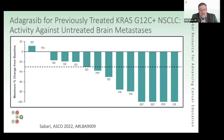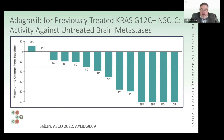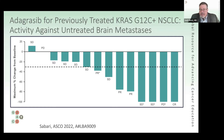Finally, there was a separate analysis of adagrasib looking at patients with untreated brain metastases, showing in a relatively small number of patients that significant shrinkage could be achieved. We really haven't seen that looked at very much with sotorasib. So the question is: what is the overall balance of efficacy and tolerability here? Is this an incremental benefit over what we already have — whether in overall or brain-specific efficacy — or is it redundant or too concerning for side effects?